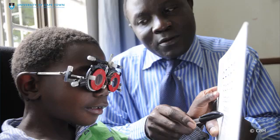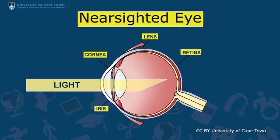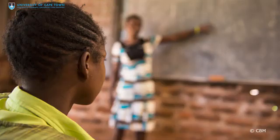An optometrist can help to determine the problem and prescribe glasses to correct the child's focus. If an eye is nearsighted, it means that the eyeball is slightly longer than normal, and this causes the image of what you are looking at to fall somewhere in the middle of the eye and not on the retina. If the image falls exactly on the retina, your focus will be crystal clear, but if it falls short of the exact spot on the retina, the image will appear very blurry.